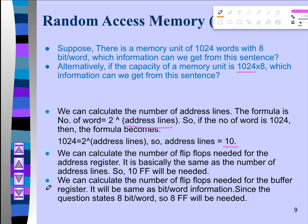Furthermore, we can calculate the number of flip-flops needed for the buffer register. This will be the same as the bits per word value. Here the bits per word value is 8, so 8 flip-flops will be needed for the buffer register. The number of flip-flops for the buffer register always equals the bits per word value.